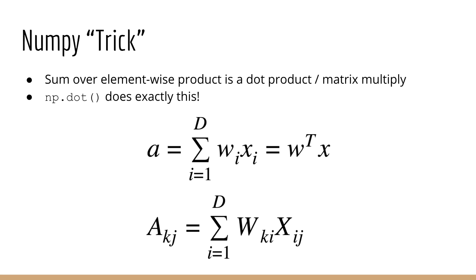Luckily, we learned this handy NumPy trick in my free NumPy prerequisites course. Whenever we see a sum over element-wise products, we remember that this is the same as doing a dot product or a matrix multiplication. If you recall, the NumPy dot function does exactly what we want.